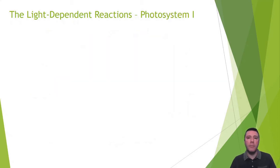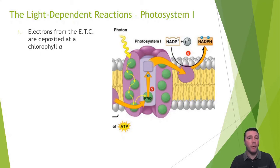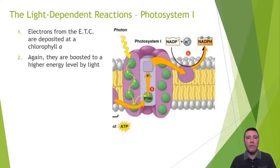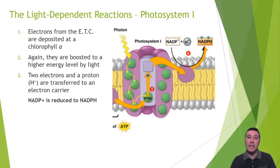The final part of the light-dependent reactions involves photosystem I. After the electrons have traveled through the ETC, they are deposited at photosystem I's reaction center, chlorophyll A. Again, excited by light, they are boosted to a higher energy level just as before. This time, however, the electrons are transferred to an electron carrier called NADP+. NADP+ is the oxidized form of the electron carrier. But once it obtains the two electrons and a proton, the reduced form of the carrier is formed: NADPH.